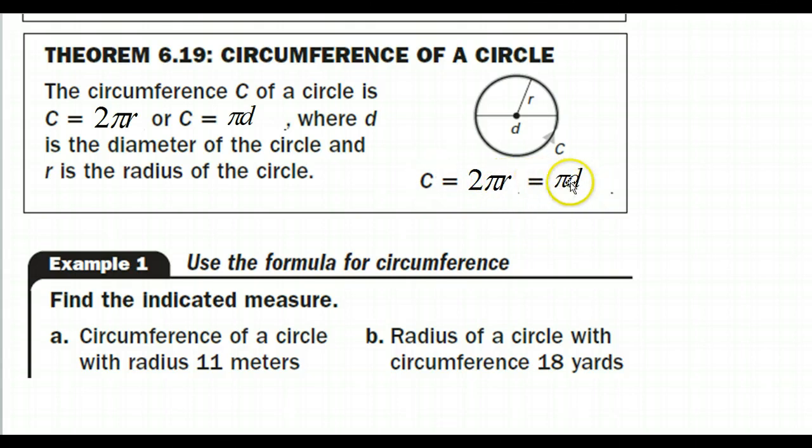So if you're given the diameter, we'll use this formula: circumference is πd. If we're given only the radius, then we'll use this formula: circumference is 2πr. But they both mean the same thing.